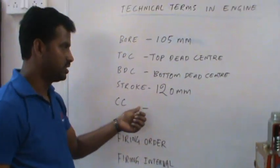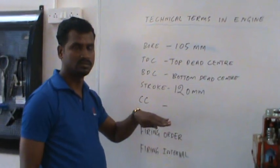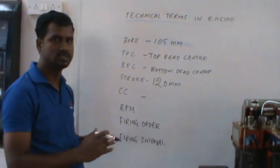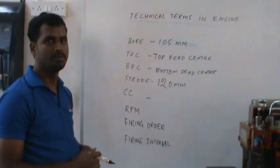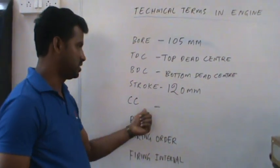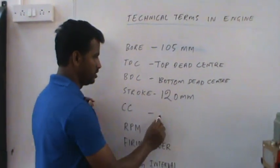CC is the volume between TDC and BDC. The volume from TDC to BDC is called as CC, cubic capacity. The unit of this is cubic centimeters. In this case, there is a formula to derive this.